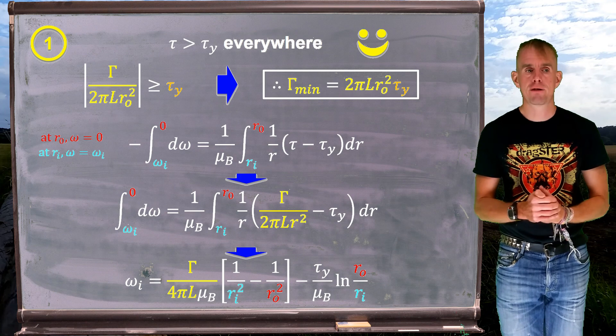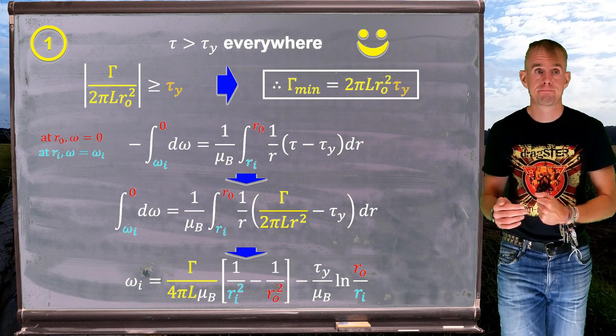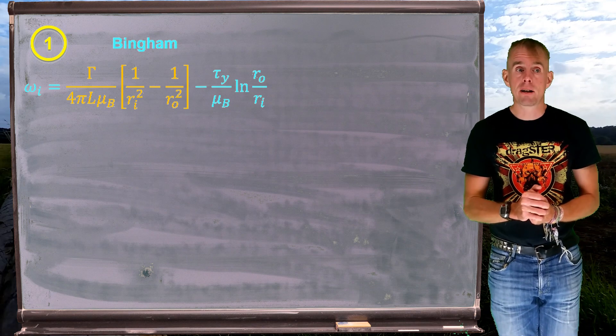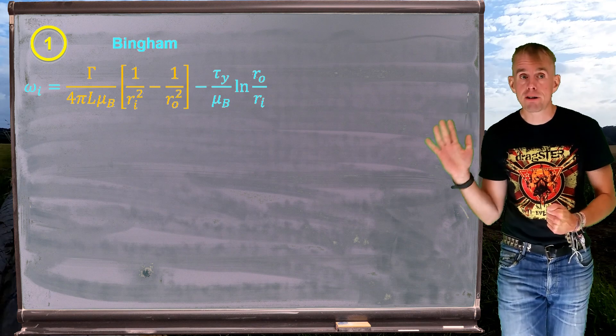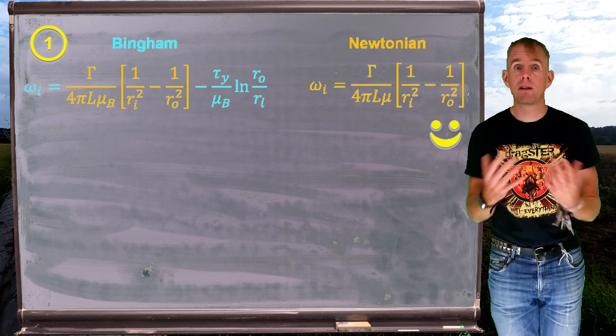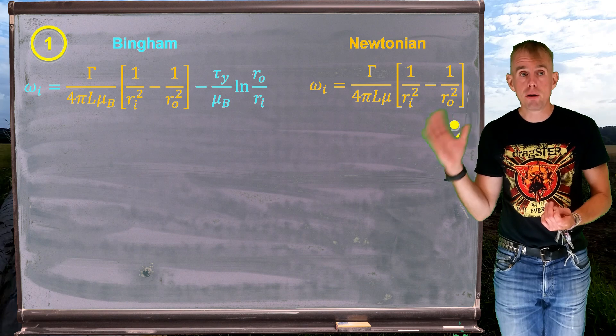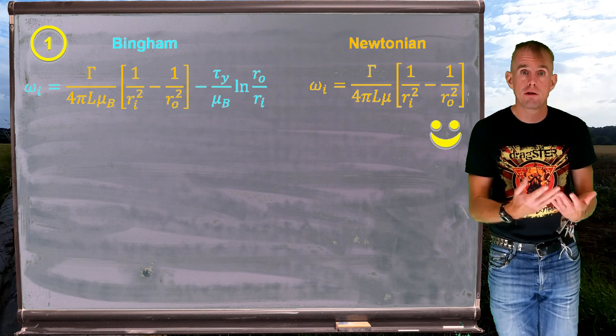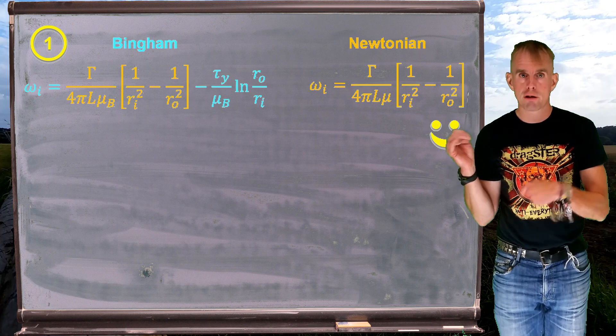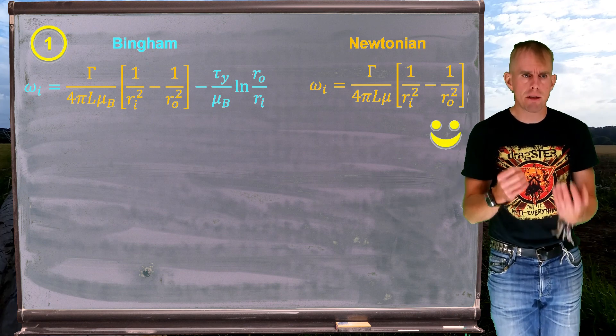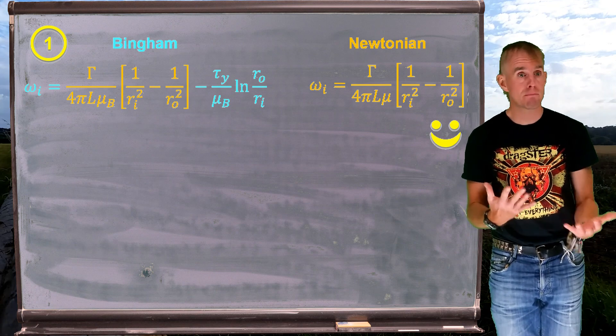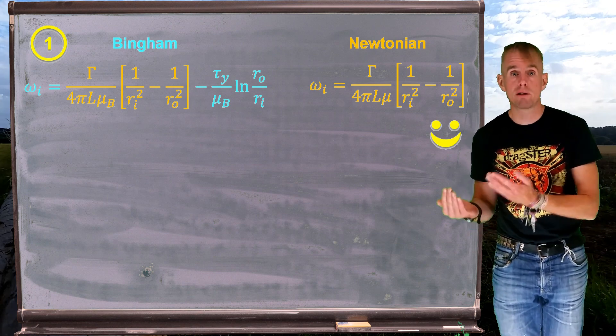So let's compare this result to what we've seen before. Now on the board is the result that we've just derived, but coloured in such a way that I can compare it directly to the Newtonian result. The terms in orange are Newtonian terms. The terms in blue are those new terms due to the yield stress. And so we can see if my yield stress falls to zero, then all I'm left with is the Newtonian result.